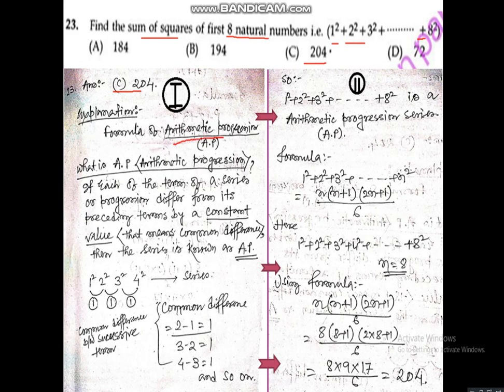This type of question is known as arithmetic progression (AP). An AP series is one where each term differs from the preceding term by a constant value — the common difference. Here, the difference between consecutive terms is always one, so this is an AP series. The formula for the sum of squares 1² + 2² + 3² up to n² is: n(n+1)(2n+1) divided by 6.